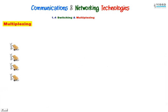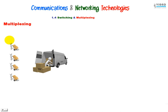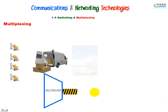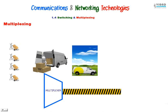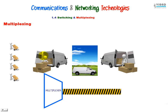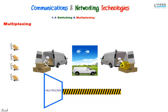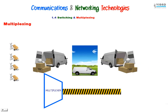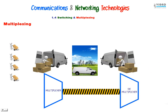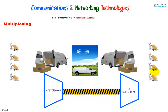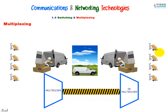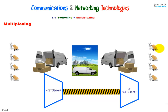And now multiplexing. We have four users who have packages to send. They are going to meet with a van — they are going to multiplex their data. The van then makes a trip with high capacity, much more than a trolley. Then demultiplexing occurs, and each user takes its data to the following destination.